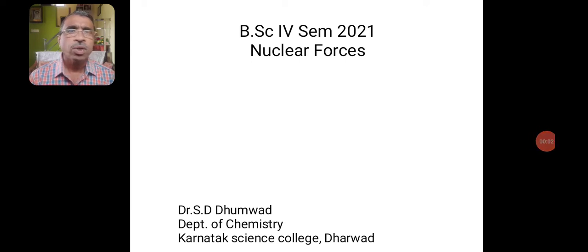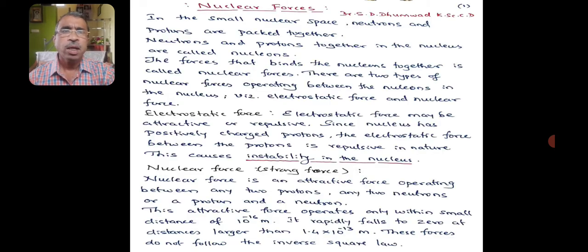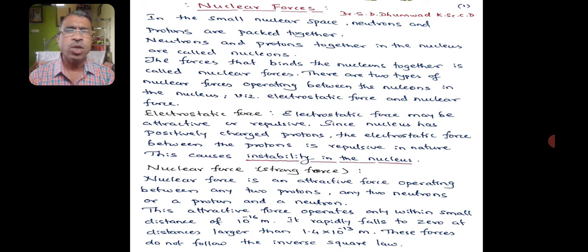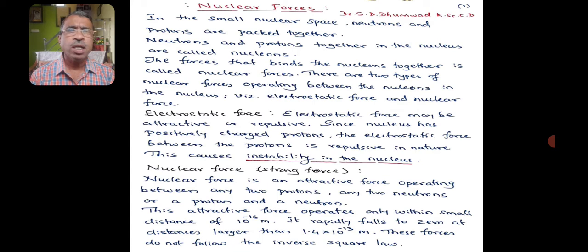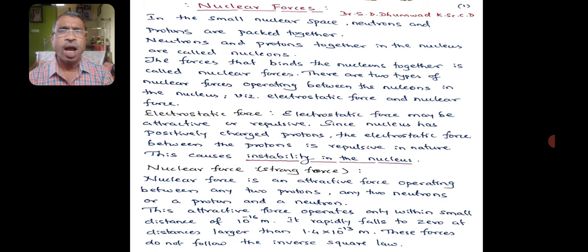Dear students, today let us deal with the topic of nuclear forces. In the earlier class you studied about nuclear particles. In the small nuclear space, neutrons and protons are packed together. These neutrons and protons together in the nucleus are called nucleons. The forces that bind the nucleons together are called nuclear forces. There are two types of nuclear forces operating between the nucleons in the nucleus: electrostatic force and nuclear force.